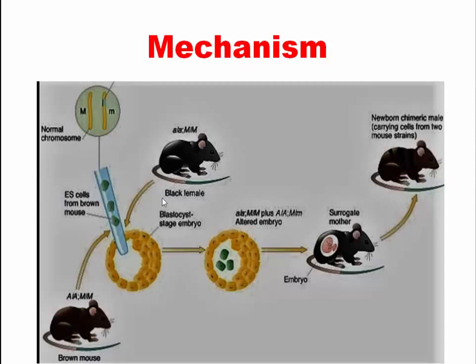From the black mouse, the blastocysts are collected and the ES cells are injected into this blastocyst by a microinjection process. This embryo is then transferred to the surrogate mother.